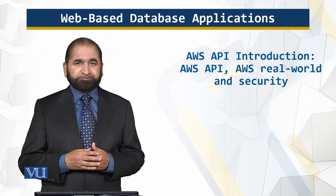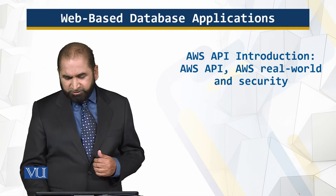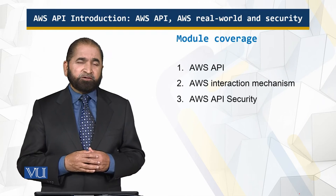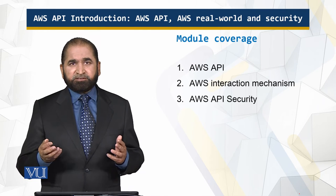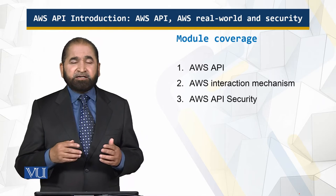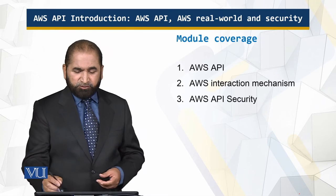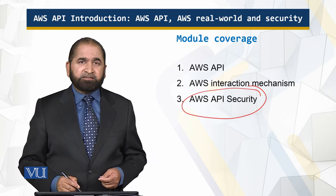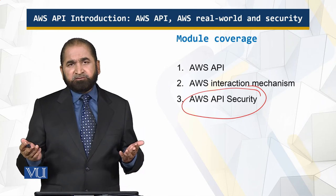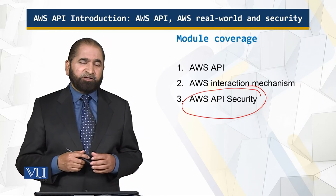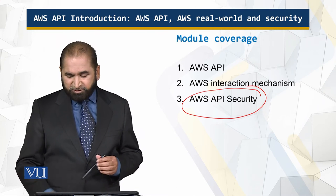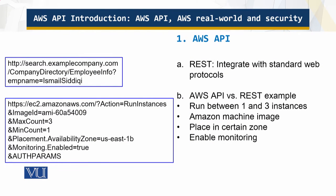So this is what we are looking at — the Amazon Web Services API, the interaction mechanism, and how security is implemented. Security is implemented in two ways, which I will share with you. We also have REST, which we discussed in the previous module — it is meant to integrate with standard web protocols, which increases the ease of use.